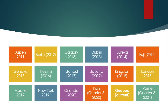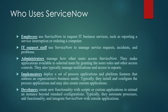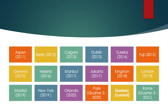What are the various versions in ServiceNow? These versions are named based on locations and countries. The first version is Aspen, released in 2011; Berlin in 2012; Calgary and Dublin in 2013; Eureka and Fuji in 2015; Geneva in 2015; Helsinki in 2016; Istanbul and Jakarta in 2017; Kingston and London in 2018; Madrid and Newark in 2019; Orlando and Paris in 2020. The current version is Quebec and the next upcoming version is Rome.